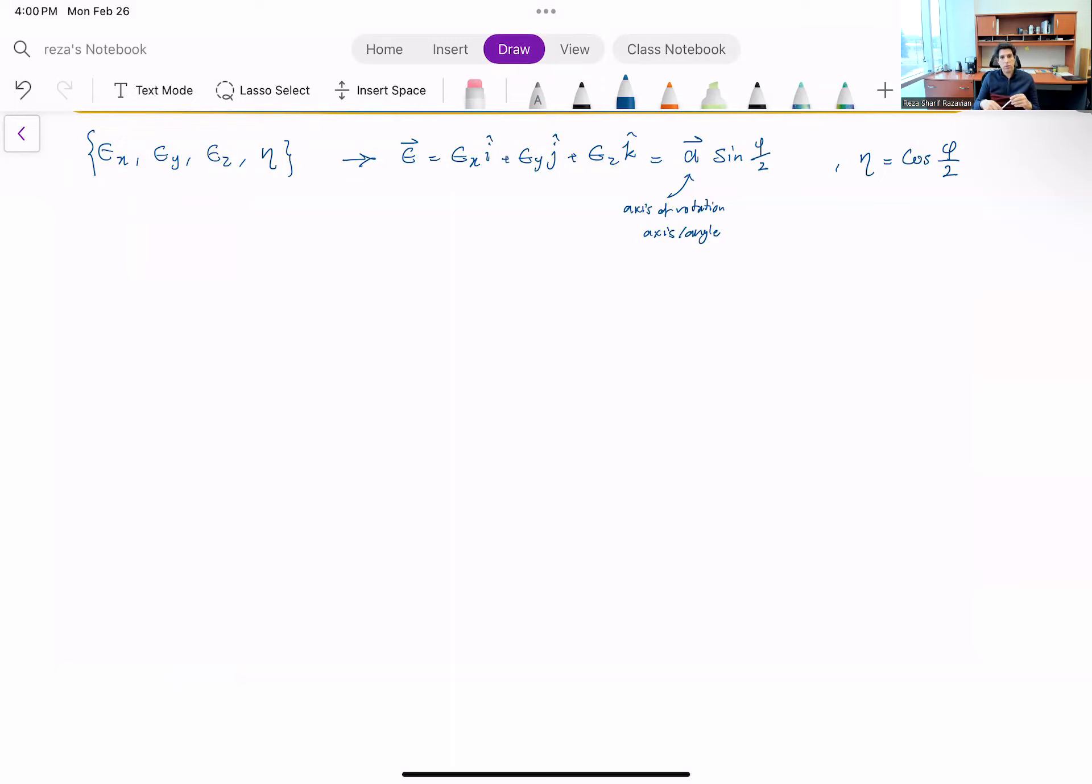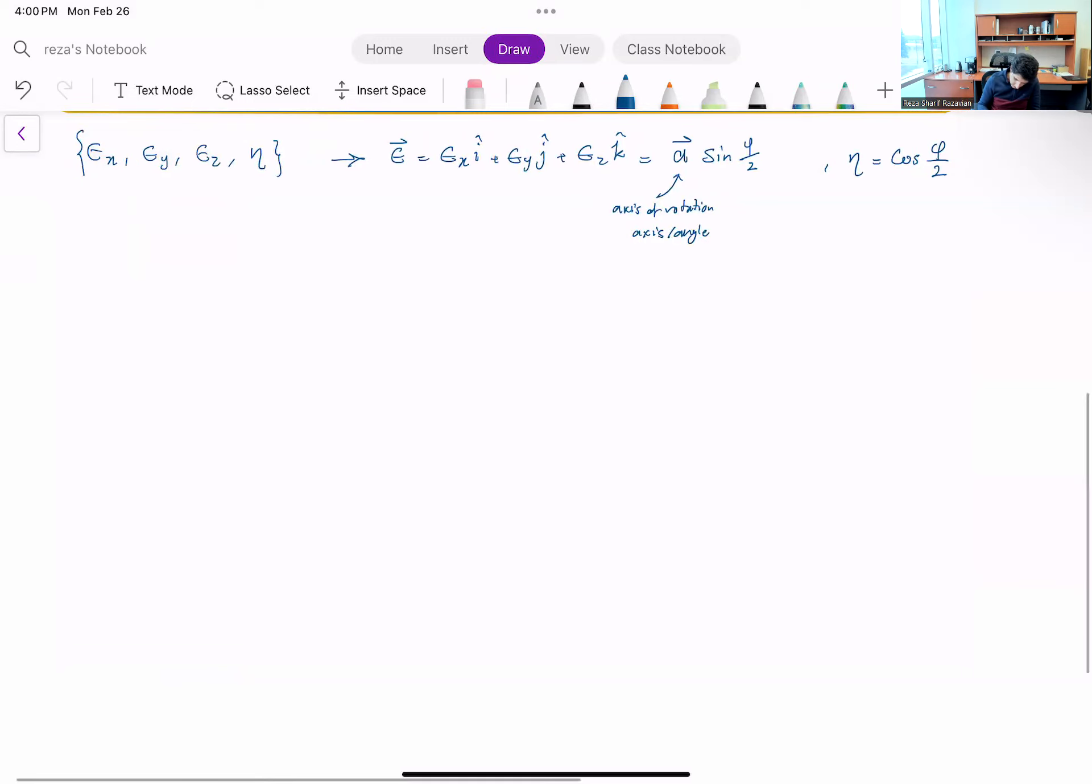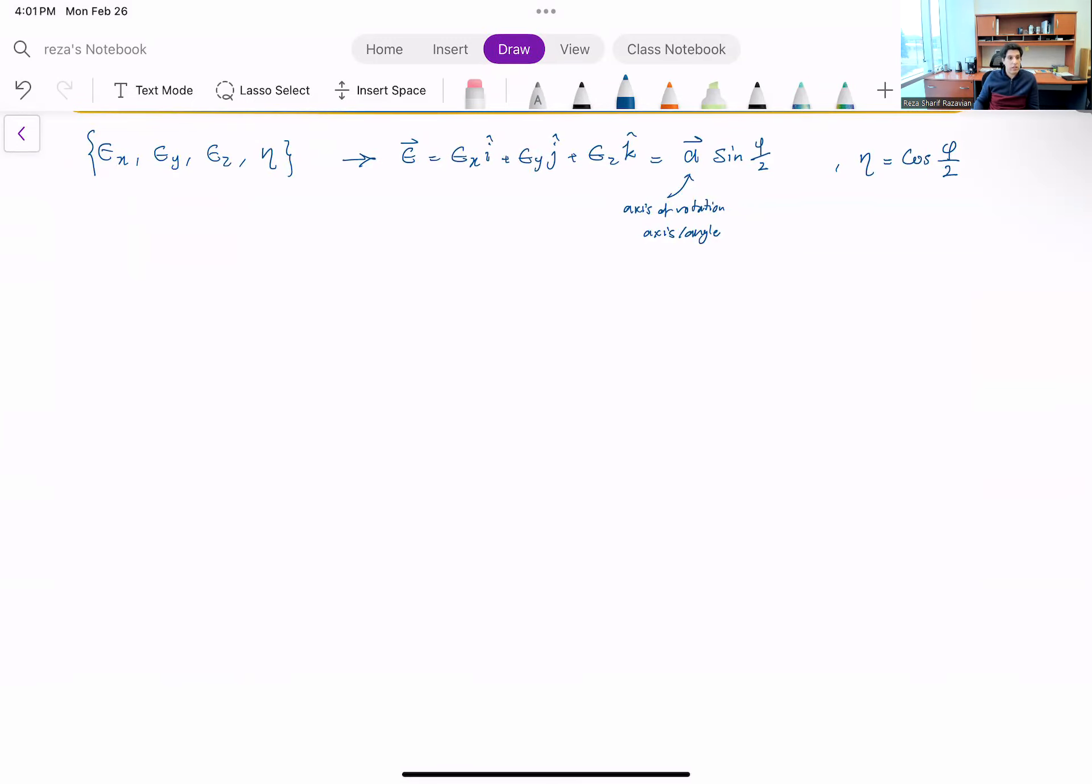And the good thing about these Euler parameters is that if you don't have any rotation, your Euler parameters are very well defined. So you don't have that issue of at zero rotation you can have infinite choice for a. So that is Euler parameters eta. So again we want to do the same thing as we have done in the previous videos, relate the rate of change of these parameters to angular velocity.